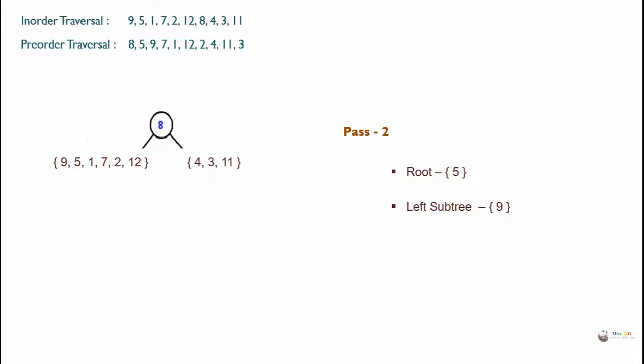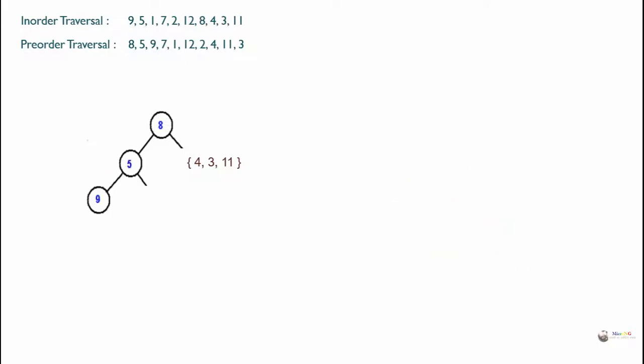The remaining elements on the right of 5 in in-order traversal are 1, 7, 2, and 12, which are all coming on the right hand side. So we can reconstruct this part: 5 will be the root, 9 will be on the left, and the remaining elements 1, 7, 2, 12 form the right subtree.